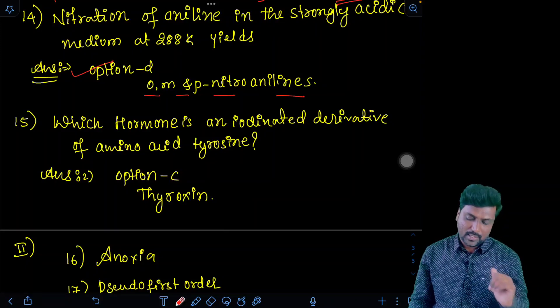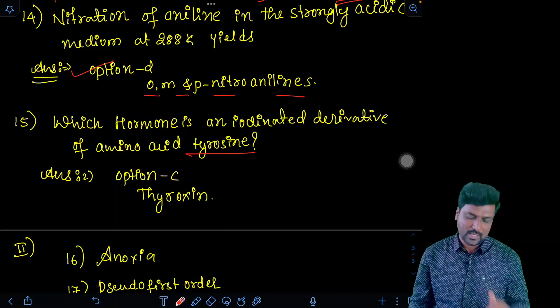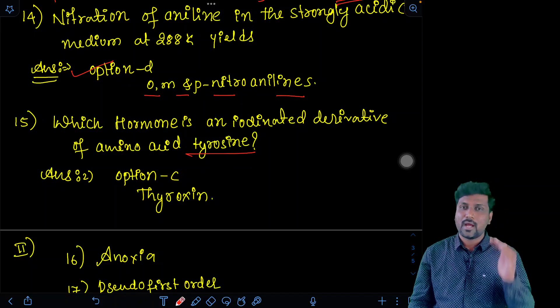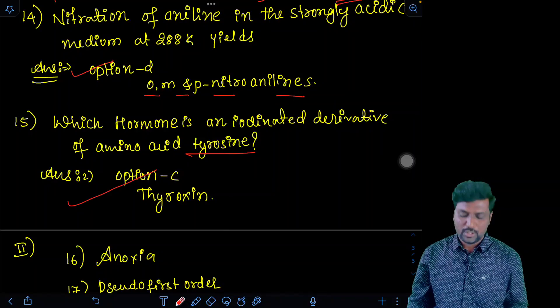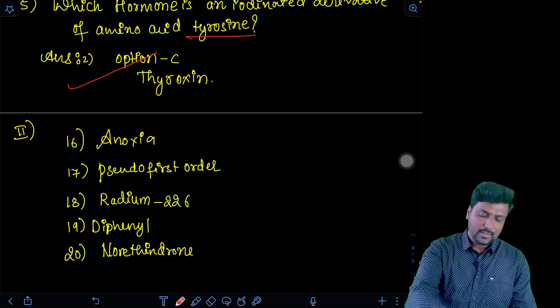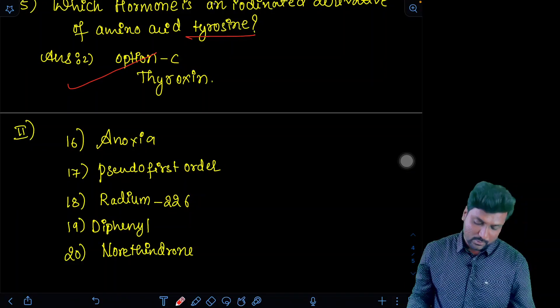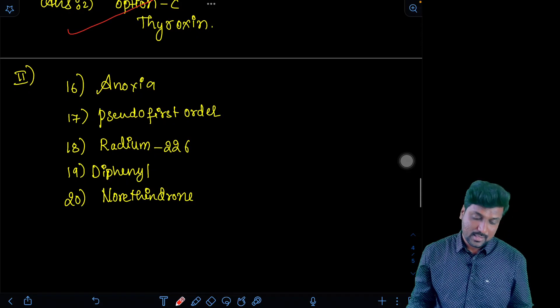Fifteenth question. Which hormone is iodinated derivative of amino acid tyrosine? Iodine containing hormone. Direct question. Option C. Biomolecule unit. That is thyroxine. I hope you all get the answers now. So now I will move to the fill in the blanks.